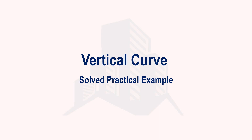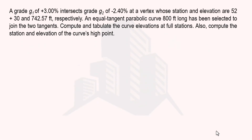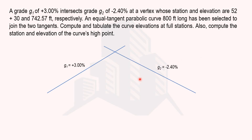In this video we are going to solve a practical example related to the vertical curve. There are two grades: g1 and g2. The positive gradient meets the negative gradient, meaning the type of curve is a crest curve. g1 is 3% and g2 is -2.4%, intersecting at the vertex where the station is 52+30 and the elevation is 742.57 feet.